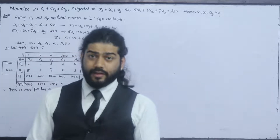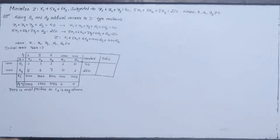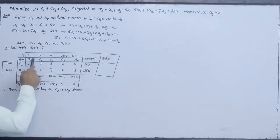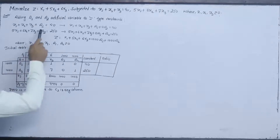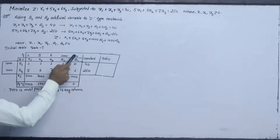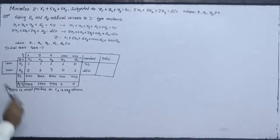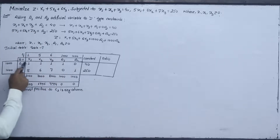We have a simplex detail setup. Now we have to make the table. We set up the standard form and proceed to construct the simplex table with the Big M (1000) values.